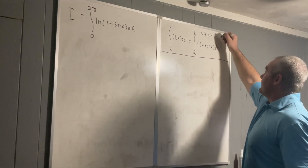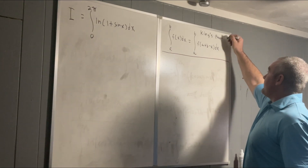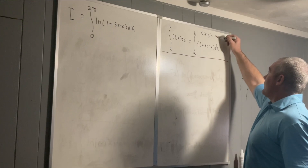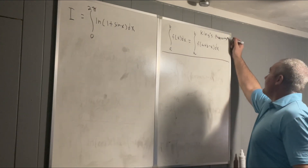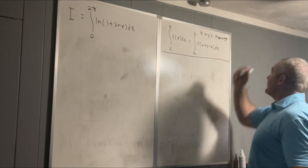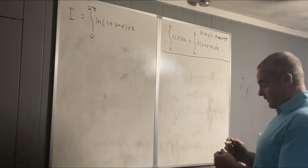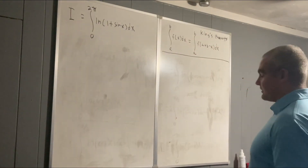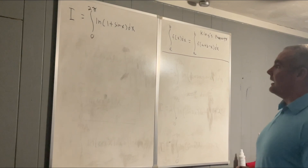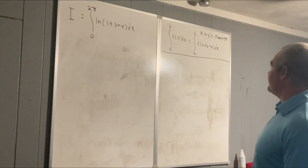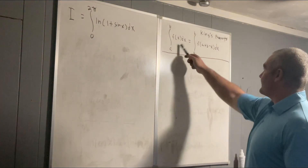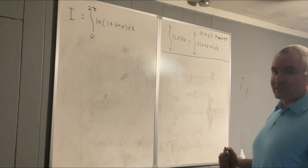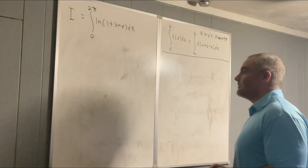King's property — I've gone over this before, and it's very easy to prove with a substitution. Just let either this equal to this or this equal to this, perform the substitution, and it's true.